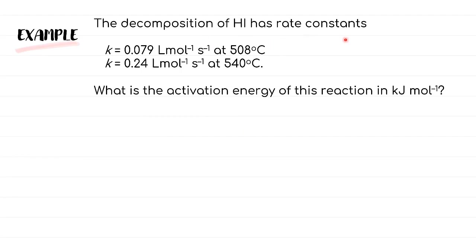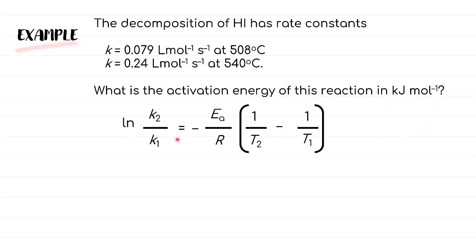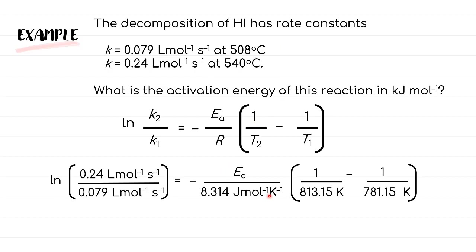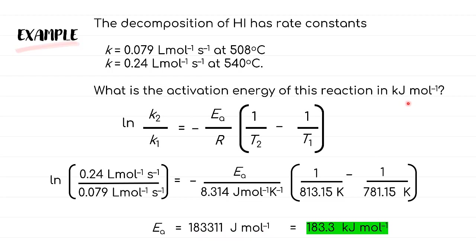Let's try an example. The decomposition of HI has rate constants k1 = 0.079 L/mol/s at 508°C and k2 = 0.24 L/mol/s at 540°C. We need to find the activation energy in kJ/mol. Using ln(k2/k1) = −(Ea/R)(1/T2 − 1/T1), we first convert temperatures to Kelvin by adding 273.15. After substituting the values and rearranging to solve for Ea, we get Ea = 183,311 J/mol. Dividing by 1,000 gives a final answer of 183.3 kJ/mol.